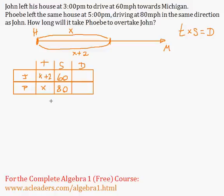Now, distance is time times speed. So that's going to be equal to 60 times x plus 2. And for Phoebe, just 80 times x.